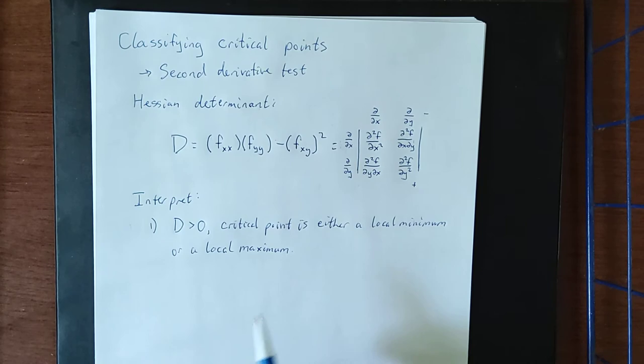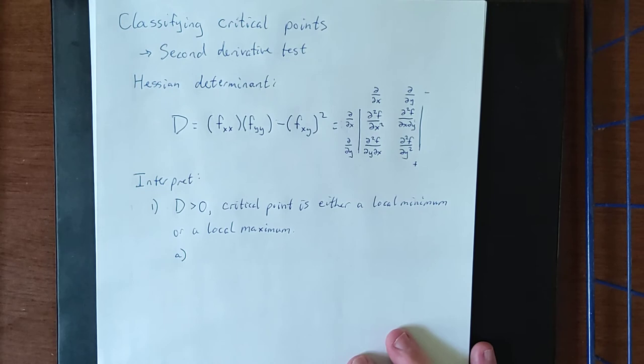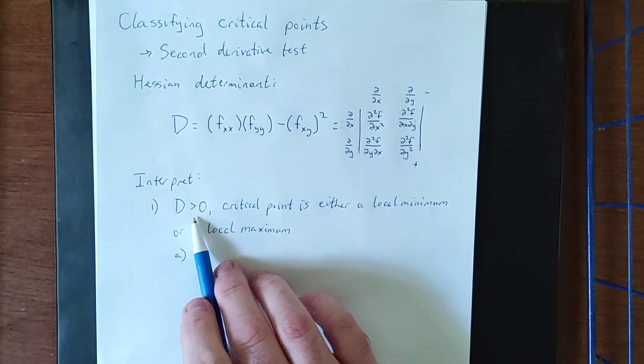I realize that might be kind of confusing due to the fact that those were the only two kinds of critical points that we had back in calc one. However, when we have access to multiple variables like we do in calc three, there is another kind of critical point.